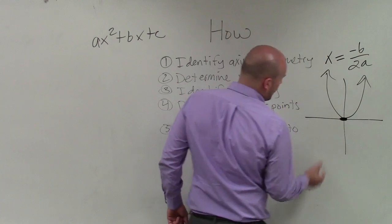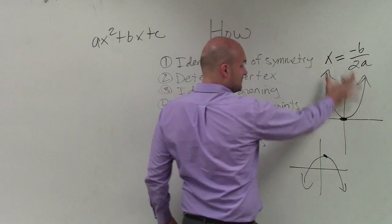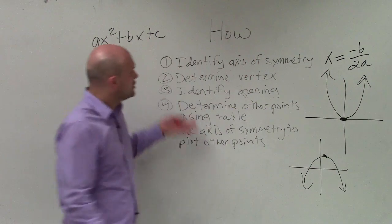The vertex is going to be the minimum or maximum point of your quadratic. So if it opens down, you have a maximum point. If it opens up, you have a minimum point. So to determine the vertex,